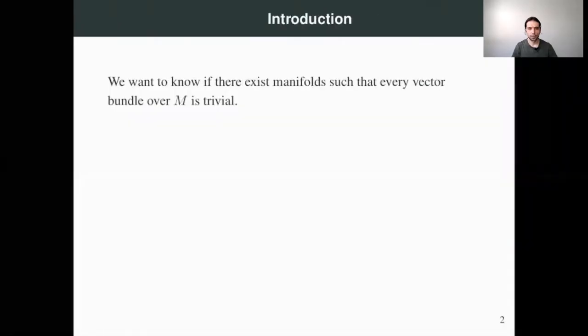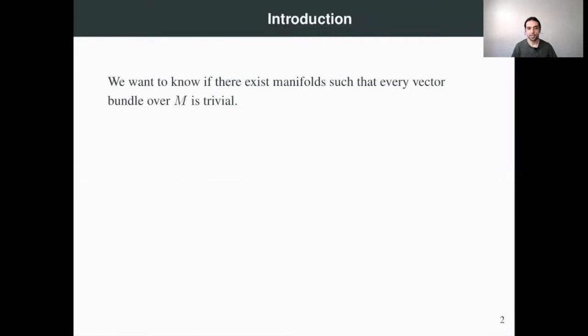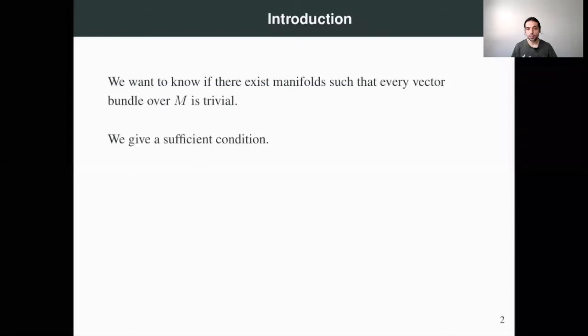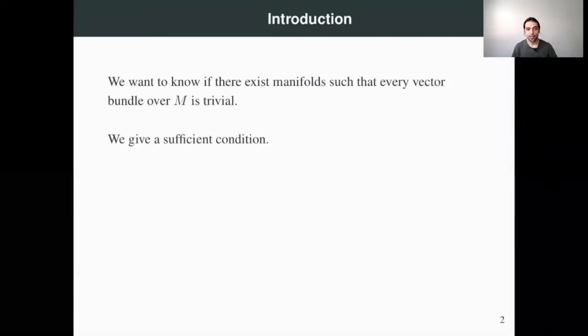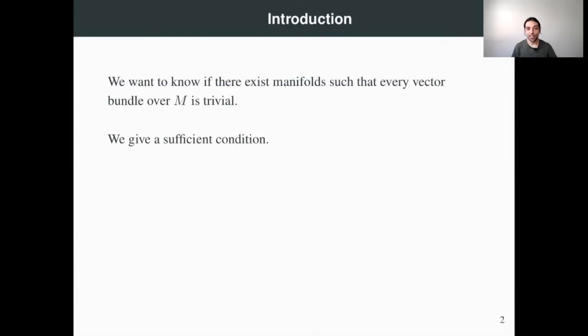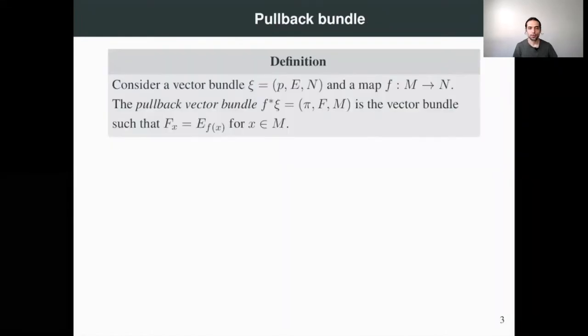In this lecture we are going to prove that every vector bundle over a contractible manifold is always trivial. In order to show this result we are going to introduce a new construction: the pullback of a vector bundle by a continuous map.